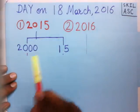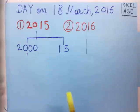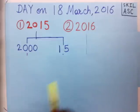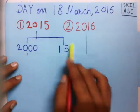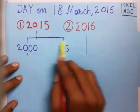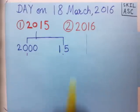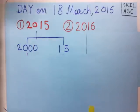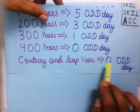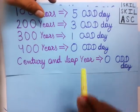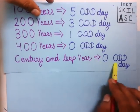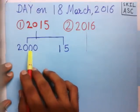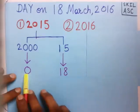So we divide 2015 such that we get a maximum century that is also a leap year — that is 2000 — and the remaining year 15. There are no centuries in the second part. Now, a century that is also a leap year has zero odd days, so 2000 will have zero odd days.